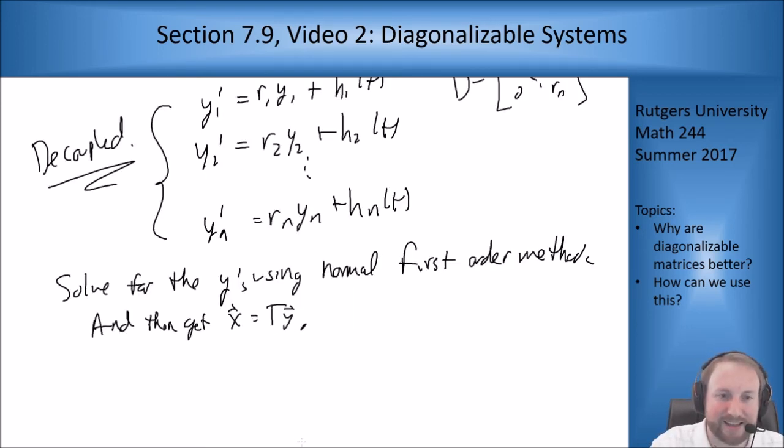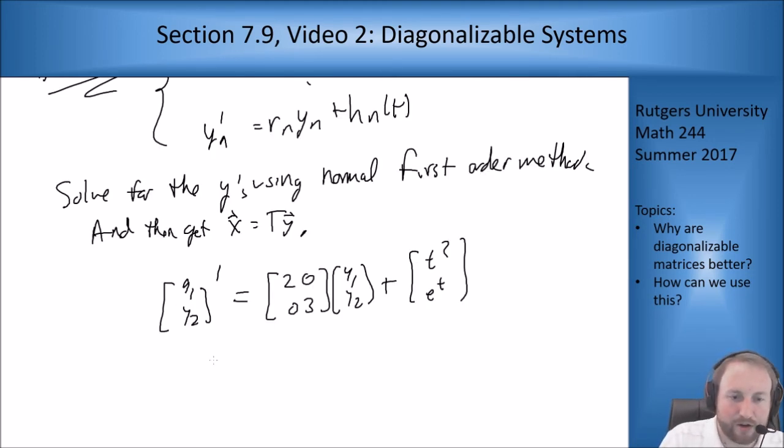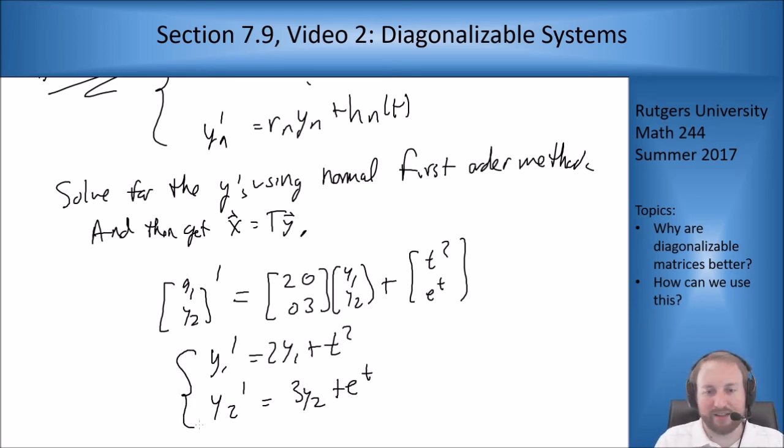So for instance this last set that may look something like y1 y2 prime equals [2 0; 0 3] times y1 y2 plus [t squared; e to the t]. And then when I split into two equations I get y1 prime equals 2y1 plus t squared and y2 prime equals 3y2 plus e to the t, both of which we can solve by normal first order methods. It's annoying, it's going to be a couple integration by parts in there for the first one, but you can do it.